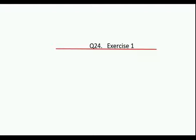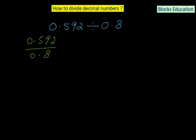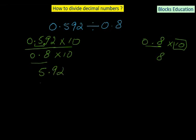This is question number 24 of exercise one. We have 0.592 divided by 0.8. Writing it in fraction form: 0.592 divided by 0.8. As per the rule, 0.8 should be a whole number or integer. Since 0.8 has only one decimal place, we multiply by 10 to make it the integer 8. We must also multiply the numerator by 10, moving the decimal one place to the right, giving us 5.92.